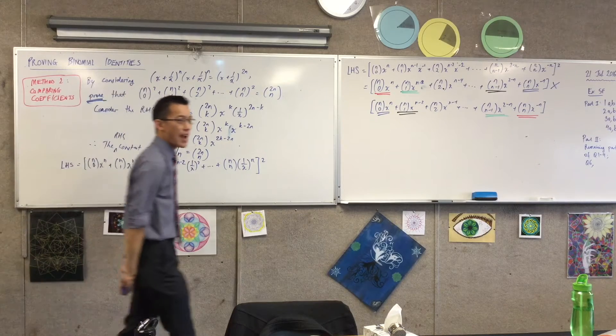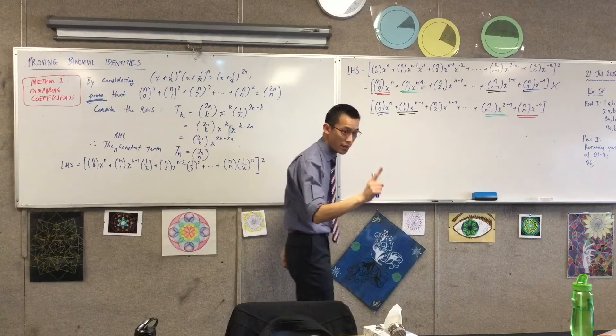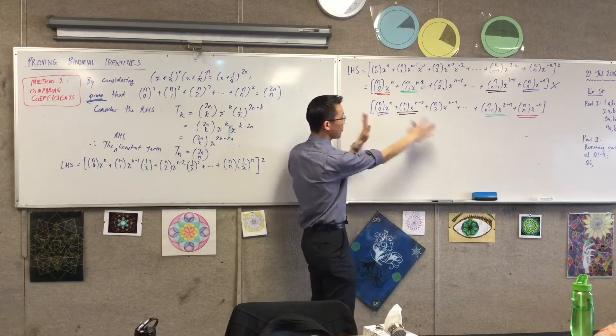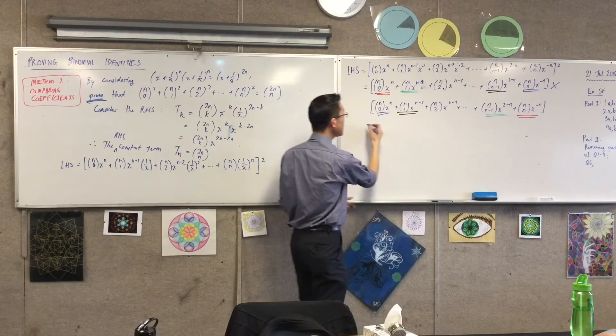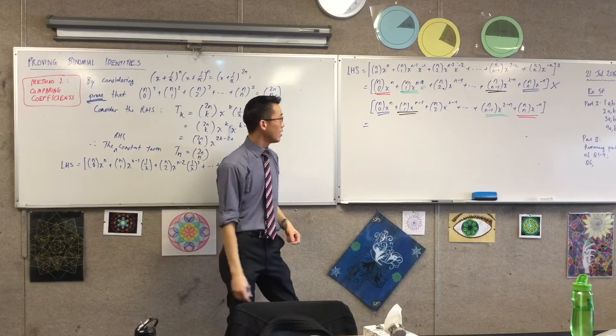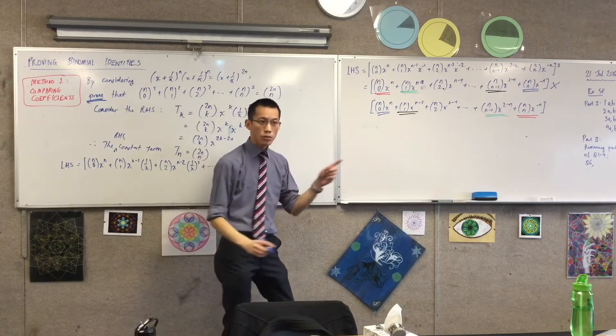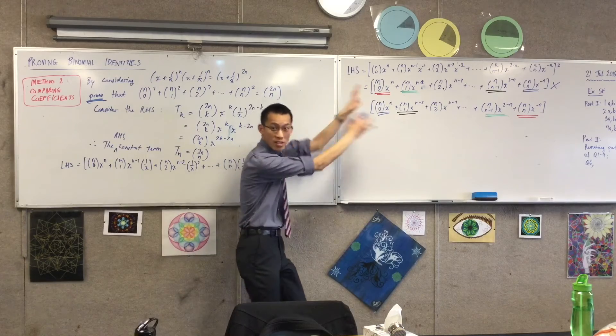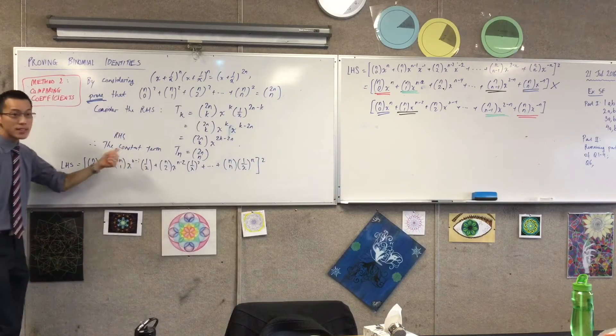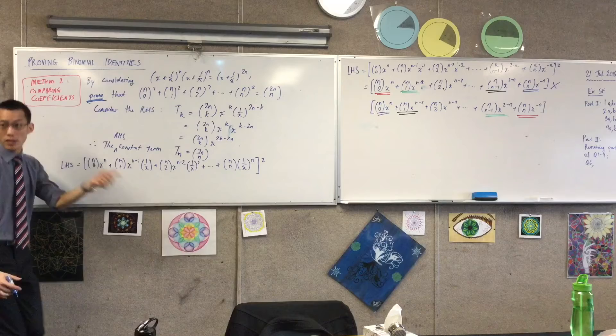I believe there are n plus one pairs. There's a pair of these for every single term. Every single term matches up. So now I'm going to write those pairs, just the pairs, because they're the only ones that give me constant terms. So they're the only ones I care about.